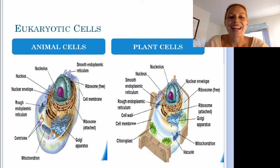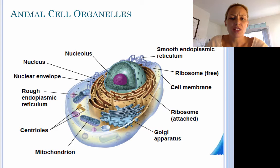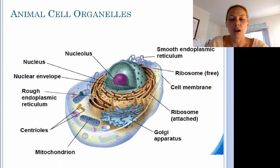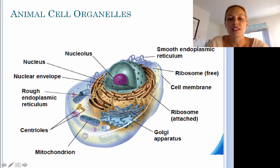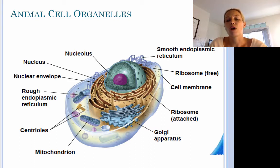Let's take a closer look at animal cells. Here is a diagram of an animal cell. You will need to be able to label the cell parts on a test or a quiz. Let's start with the nucleus in the center of the cell. The nucleus holds the genetic information or the DNA for the cell. Within the nucleus, we have the nucleolus, which is responsible for producing ribosomes.